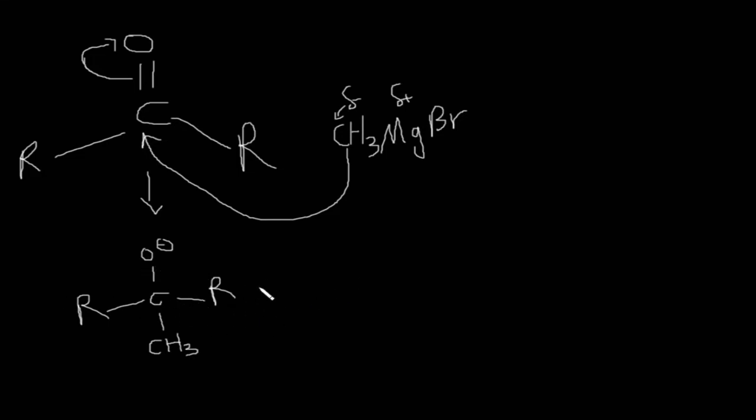Now if you don't have any good leaving group after that in this intermediate, then this O minus gets protonated and it becomes an alcohol. But if there is a leaving group in this intermediate, like OR or a halogen like chlorine or bromine, then this pair of electrons can go back and form a double bond and the leaving group can leave. If you have an OR group here then it can leave, or if you have chlorine atom then it can leave too, and then you get a ketone.